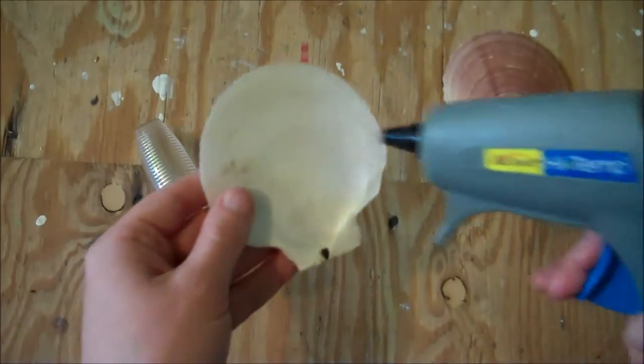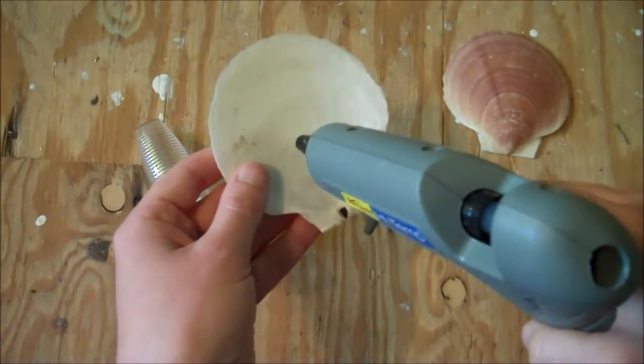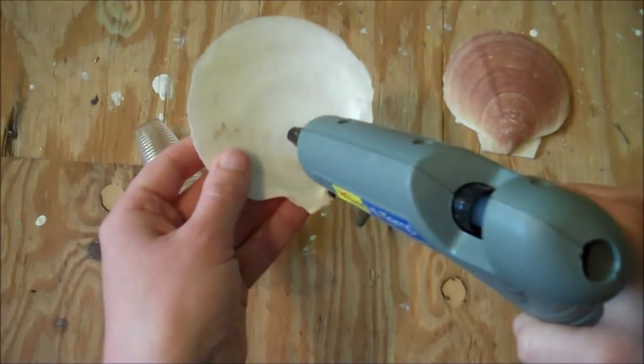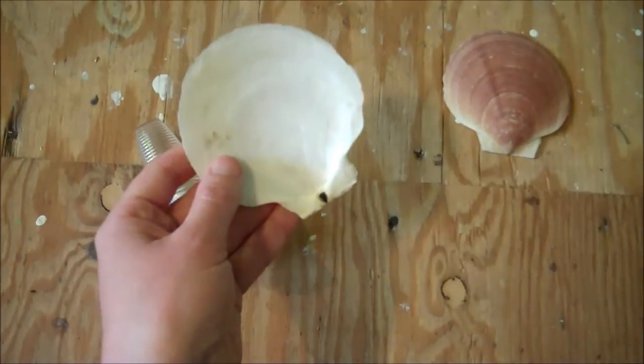And then take a glue gun and put a line of glue along that area. And if you use white shells you can't see the glue at all.